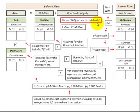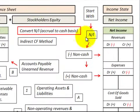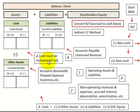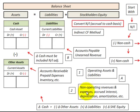To convert our net income from the accrual to the cash basis, we're going to use the indirect cash flow method. That's where we start with our net income, then subtract out any non-cash revenues, add back any non-cash expenses, and take care of the changes in cash that must be included in our net income adjustments. We do this for the operating assets and liabilities, and we also have to adjust for non-operating revenues and expenses.